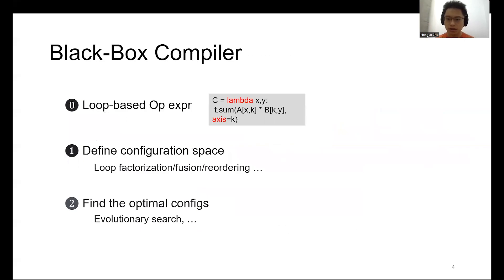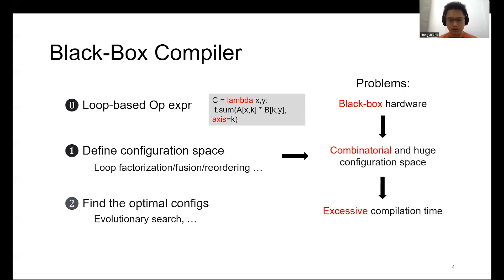So why is the compilation time often so long? The answer lies in its workflow. The input to the compiler is usually the loop expression of the operator, and the compiler then generates a configuration space where each configuration represents a combination of loop transformations. It then searches for the optimal configurations with heuristic algorithms and finally generates the corresponding device code. The fundamental limitation of this approach is that it treats the underlying hardware as a black box, and the configuration space will be huge. As a result, searching on a huge space will be extremely time consuming.